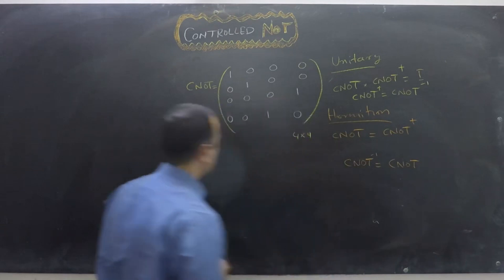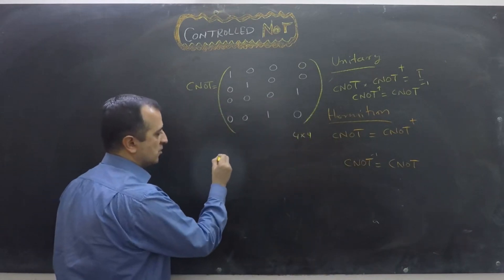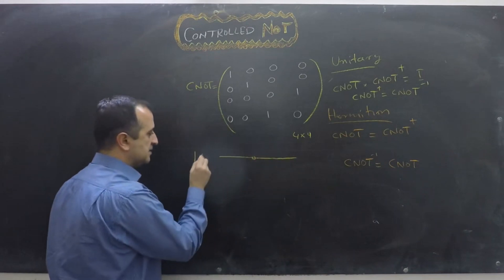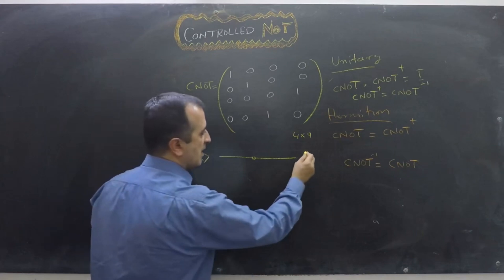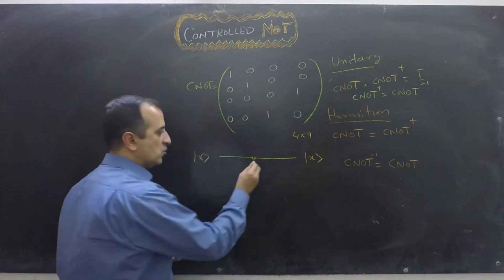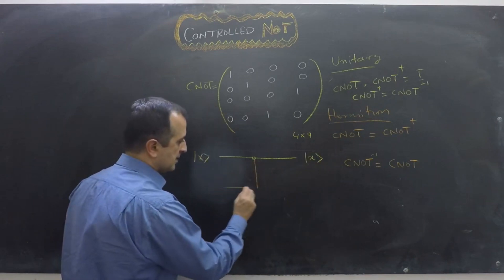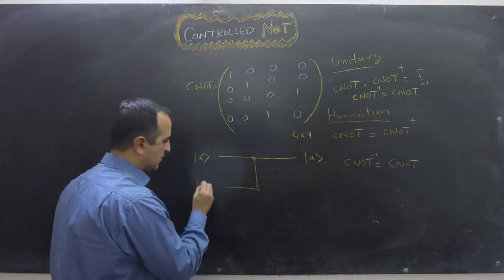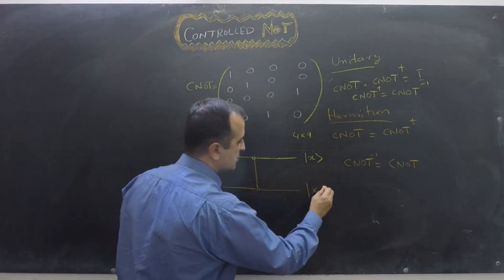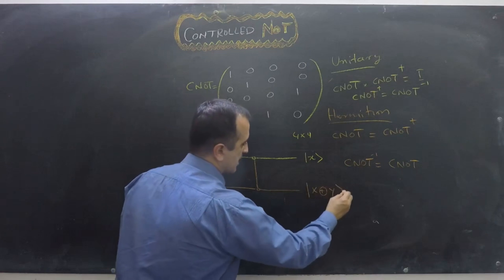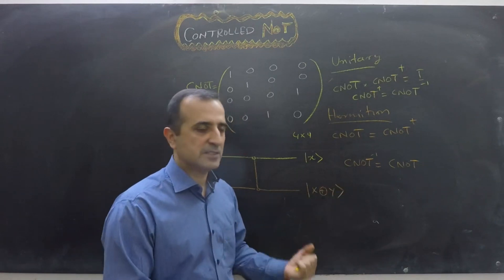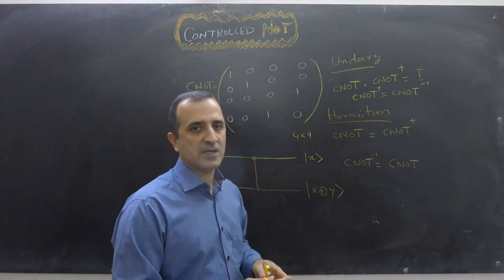In the general form, we can represent CNOT as: the first qubit x passes through unchanged, and the second qubit y becomes x XOR y on the output. When we XOR with 0 the result remains the same, and when we XOR with 1 the result flips.